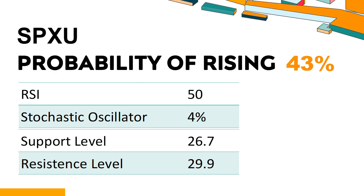The current stochastic oscillator of SPXU is 4%. When the indicator falls below the 20 level, it is usually considered oversold, indicating that a price rebound or recovery is likely for the stock. An oversold condition occurs when the stock price falls too fast and too much in a short period of time, which may indicate that the selling pressure has exhausted.